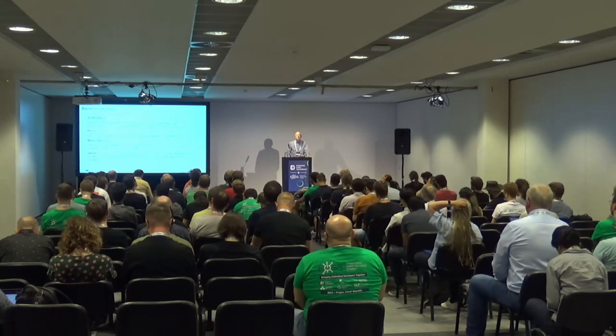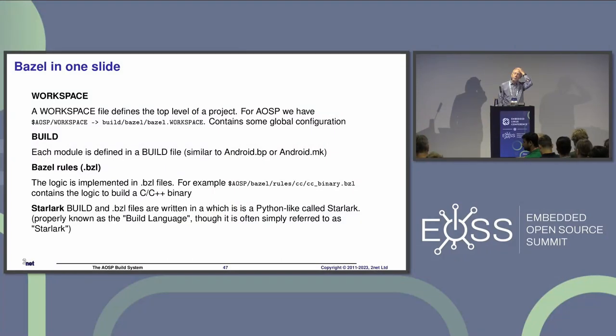You said you cannot have dependencies between mk targets and bp targets — is this bidirectional? If you have an Android.mk file and want a dependency on something declared in an Android.bp file, that definitely doesn't work. I haven't got to the exact reason — maybe because two different tools calculate the dependencies, or it has to do with the order in which the Ninja files are included. Thank you, Chris.